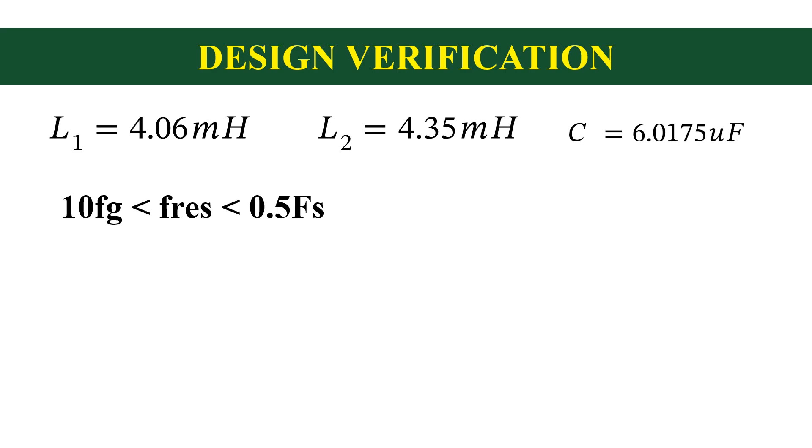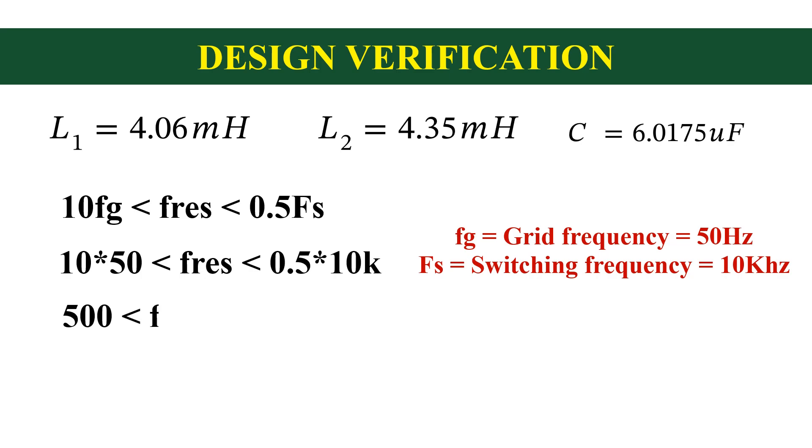Where fg is the grid frequency, which is 50 hertz, and fs is the switching frequency, which is 10 kilohertz. So, the resonance frequency should be within 500 hertz and 5 kilohertz.